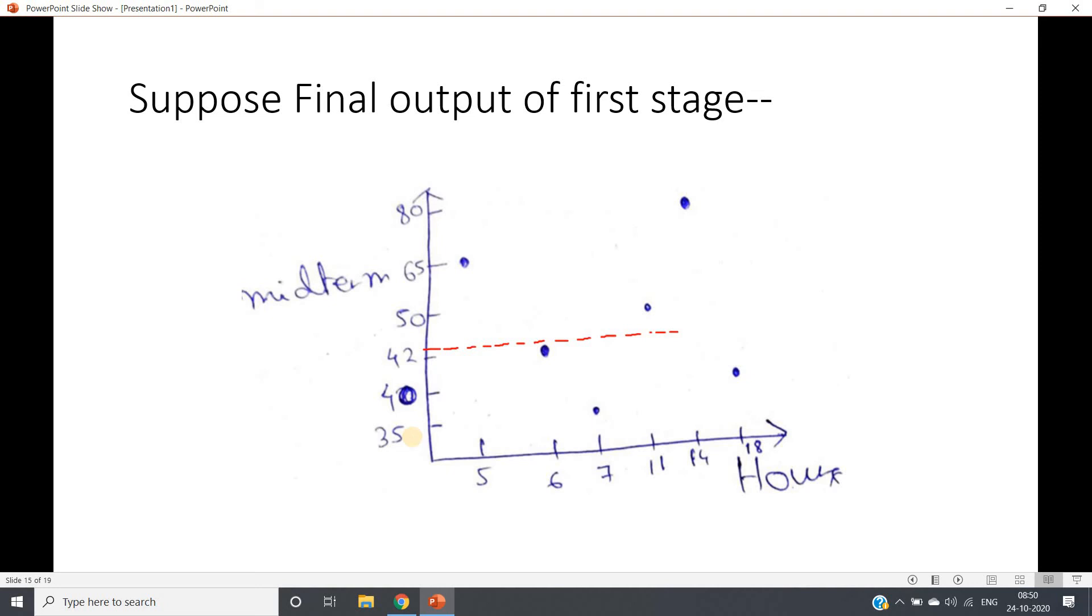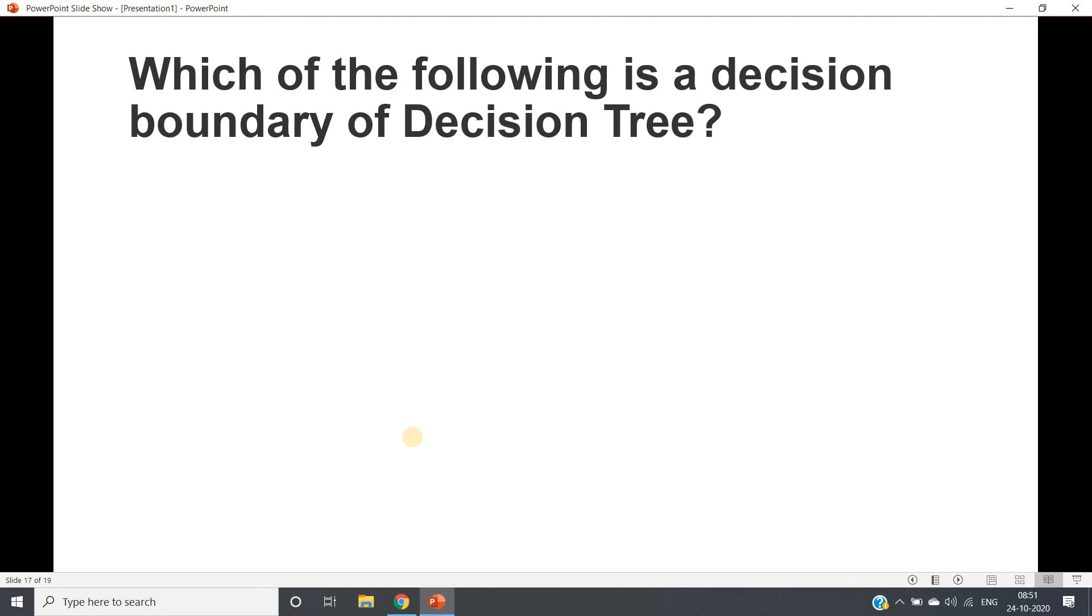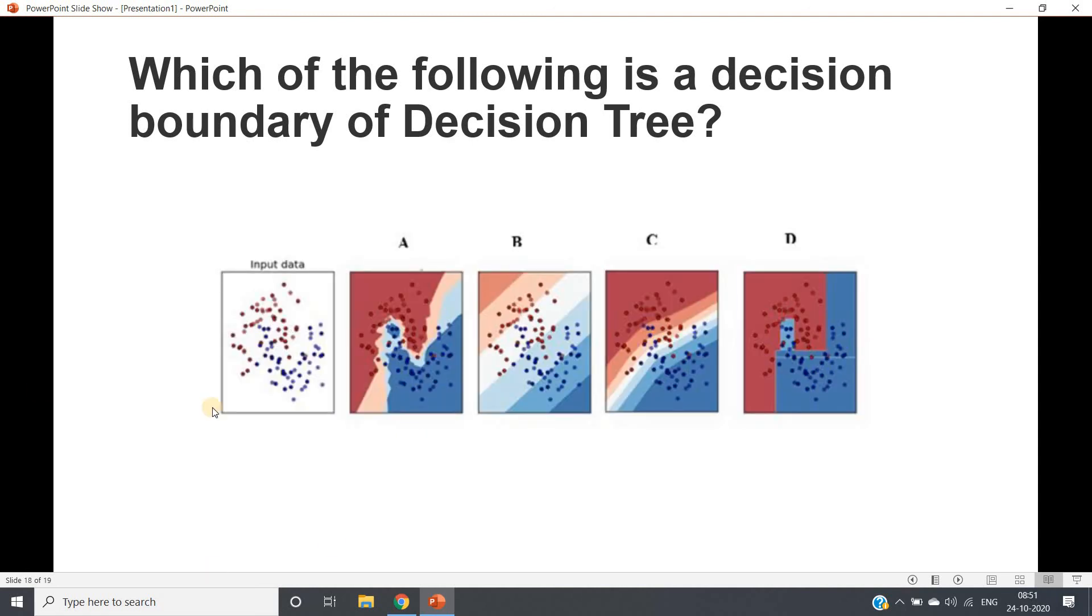Remember this point. An MCQ can be framed like this: which of the following is a decision boundary for decision tree? Four options will be given. If this is our input data, you need to predict which can be one possible decision boundary for decision tree. So tell me which one is correct.